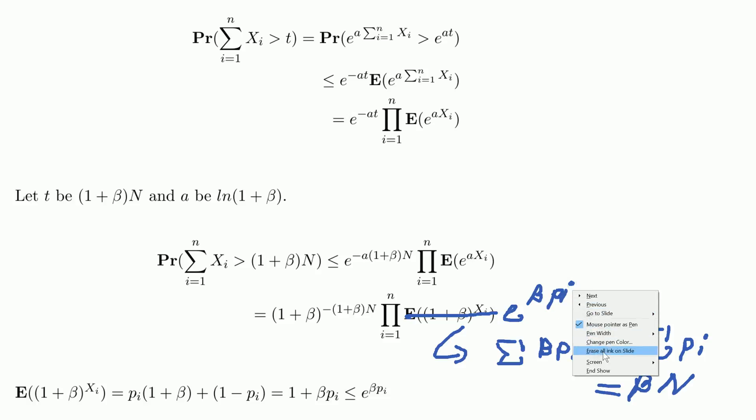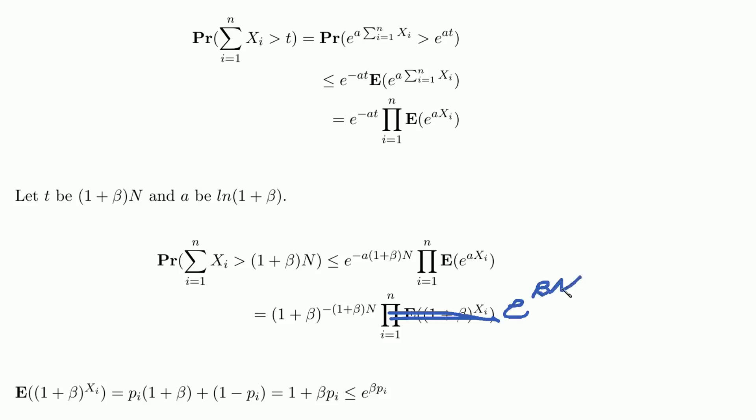Now if we write this down right here, this is actually just beta times the expected value in the exponent. And this whole product goes away.